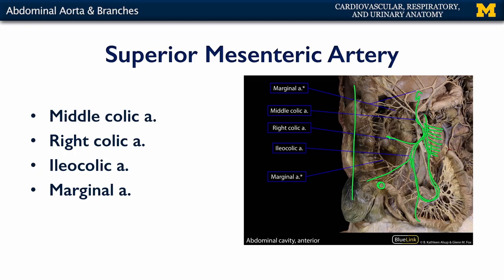The SMA has both intestinal branches and colic branches. Importantly, all the colic branches supply the marginal artery with blood. The marginal artery is an anastomotic cascade surrounding the large intestine, where branches — right colic, middle colic, ileocolic, and even branches from the inferior mesenteric artery — all anastomose to provide strong collateral circulation between the midgut and the hindgut.